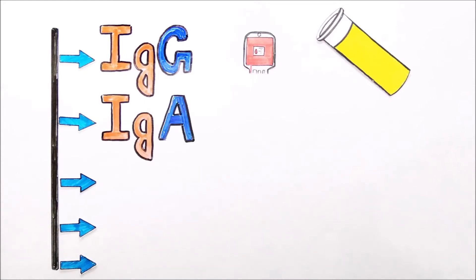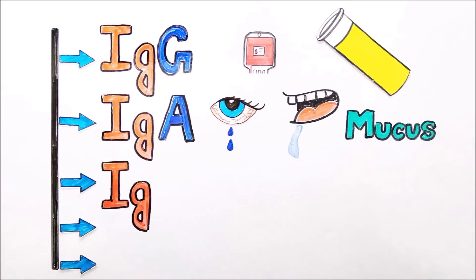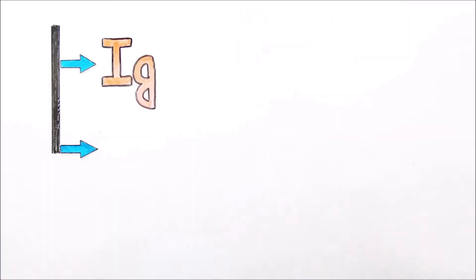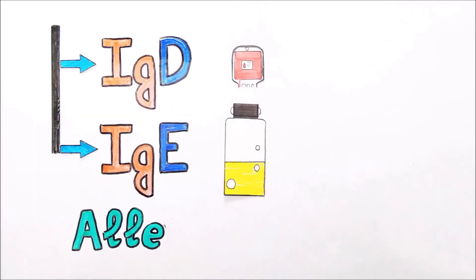Immunoglobulin A, or IgA, are present in tears, saliva, and mucus. Immunoglobulin M, or IgM, are the largest antibody and they are found in the blood. Immunoglobulin D, or IgD, is present in small amounts in the blood. Immunoglobulin E, or IgE, is present in very small quantity in the serum and it initiates the allergic reaction.